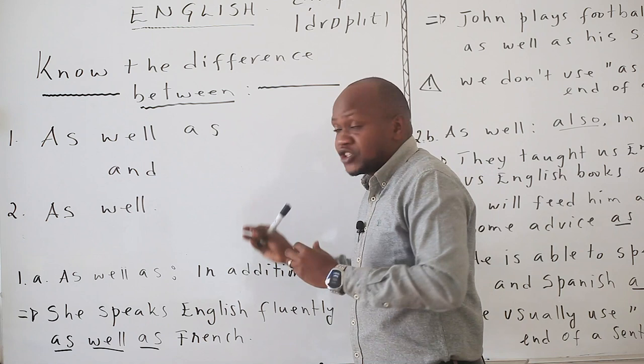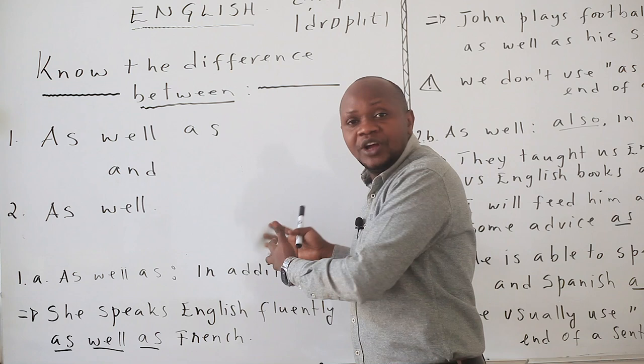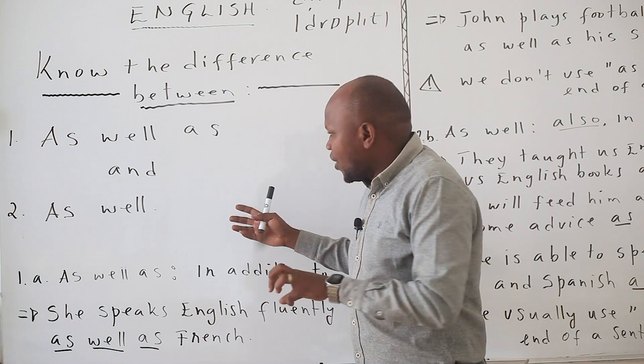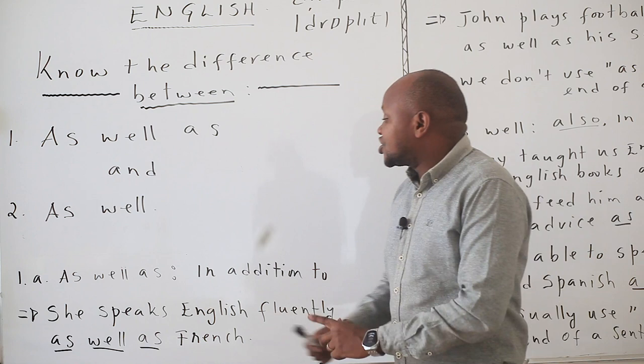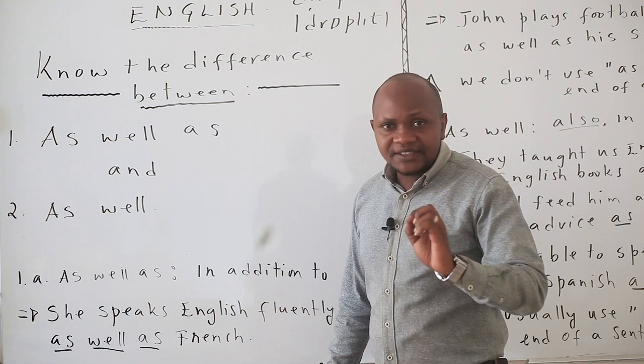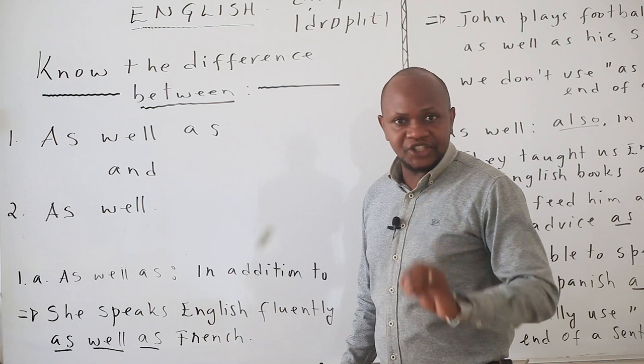We use as well as to mean 'in addition to' or 'in addition.' For example: 'She speaks English fluently as well as French.' This means she speaks English fluently, and in addition to that, she also speaks French.